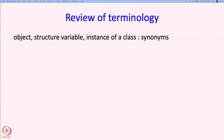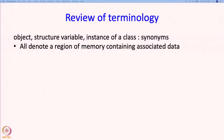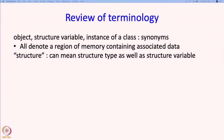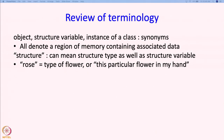The terms object, structure variable, and instance of a class are synonyms. All of them denote a region of memory which contains the data associated with that object, structure variable, or class instance. The term structure can mean a structure type as well as a structure variable, and which one it is will be clear from the context — similar to how the word 'rose' can mean a type of flower or a particular flower in hand.